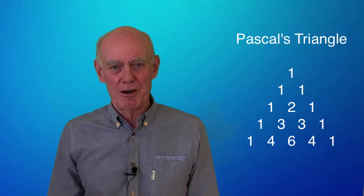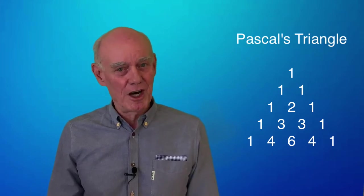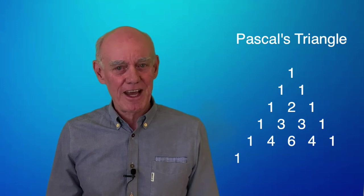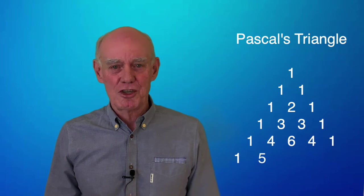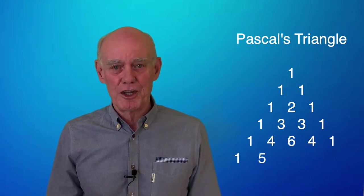Can you write the next row in this pattern? The first number should be a 1, and the number after that, 5. But what number comes next?